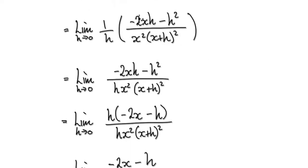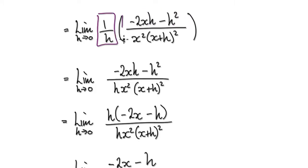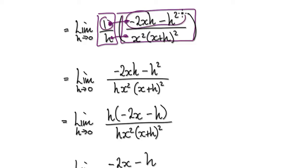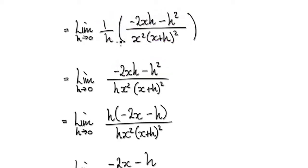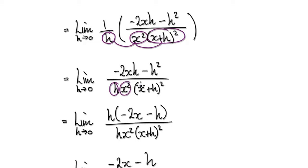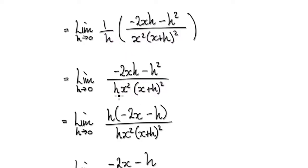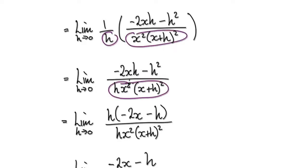Now what you've got is two fractions multiplying with each other — top times top, bottom times bottom. One times this whole thing stays the same, and in the denominator you've got three bubbles multiplying with each other, so just merge them together. Write it as h times x squared times (x+h) squared.